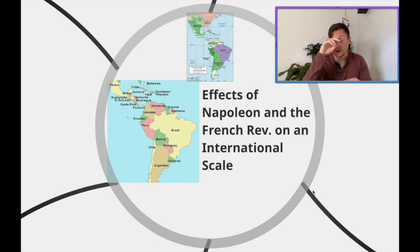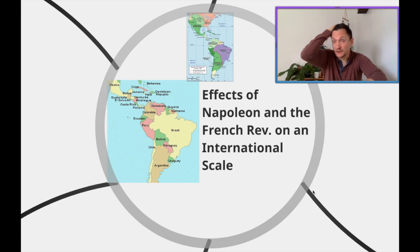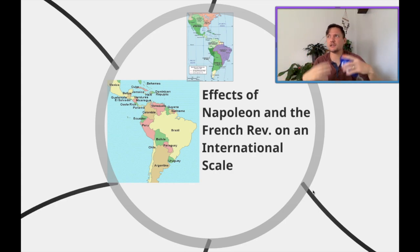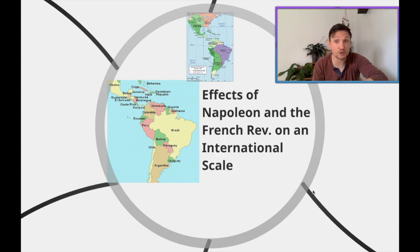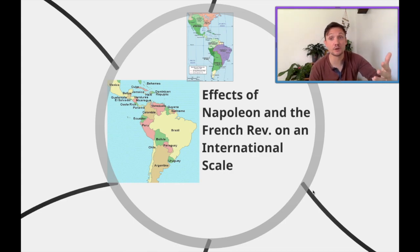Welcome back! We are going to try and fly through the effects of Napoleon and the French Revolution on an international scale. In the last flip, we talked about the rise of the isms, the Congress of Vienna, picking up the pieces of Napoleon in Europe, and the growth of ideologies like conservatism, socialism, nationalism, and classical liberalism.